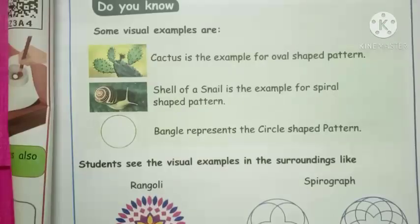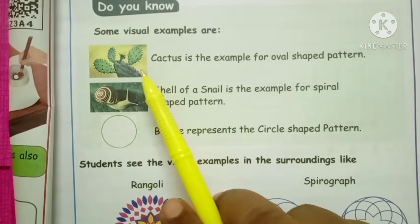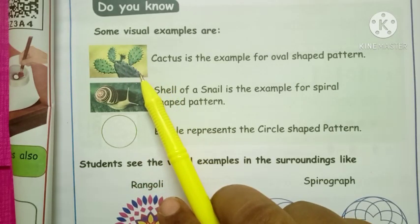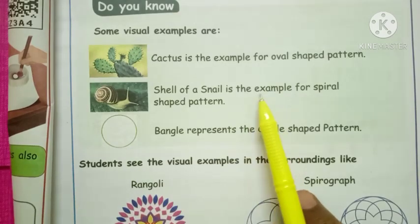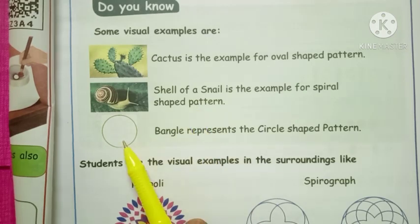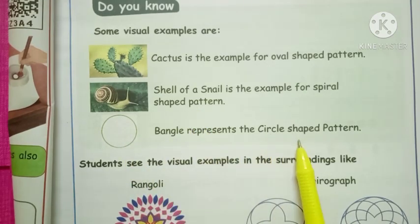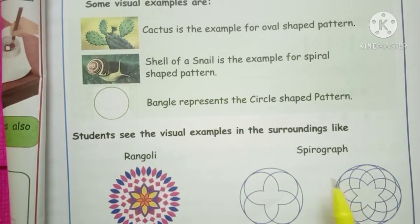The next example gives some visual examples. Katkas is an example of oval-shaped patterns. The shell of a snail is an example of a spiral-shaped pattern. A bangle is an example of a circle-shaped pattern, as is rangoli. Then there is the spirograph.